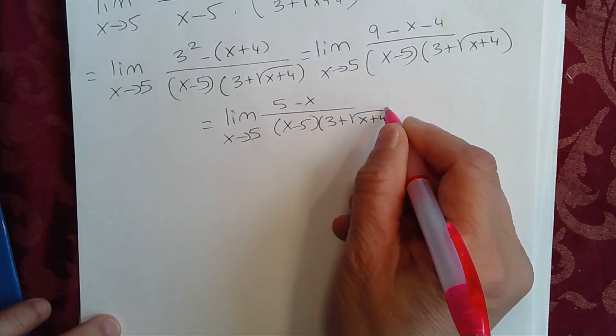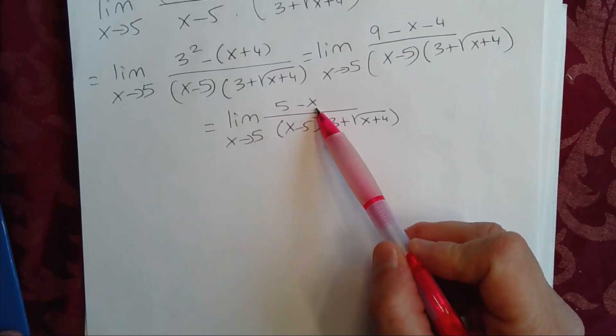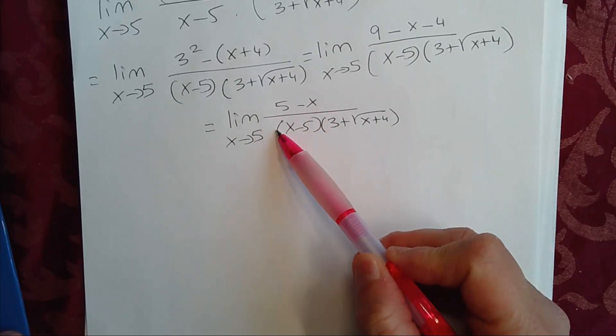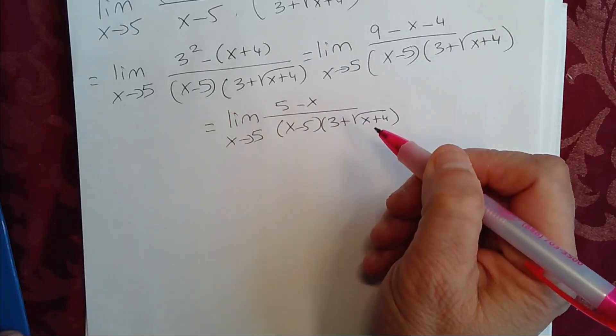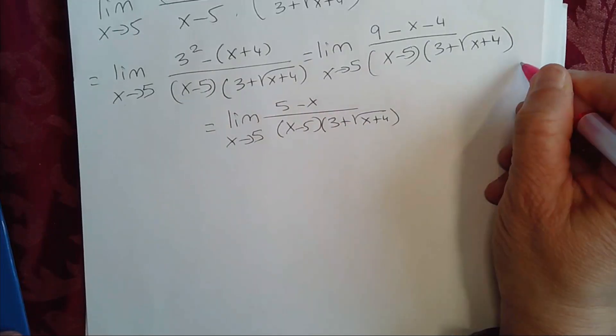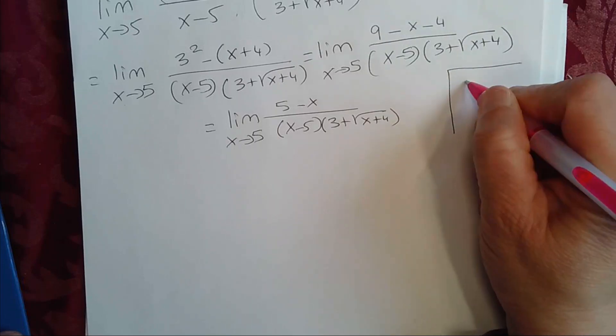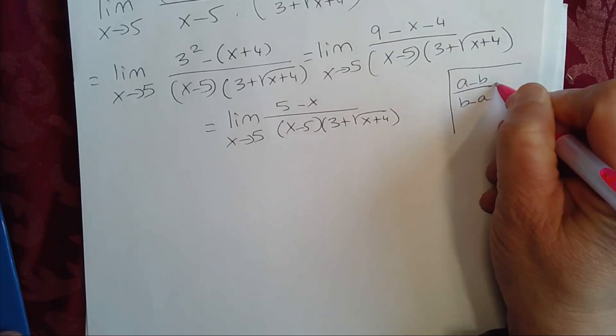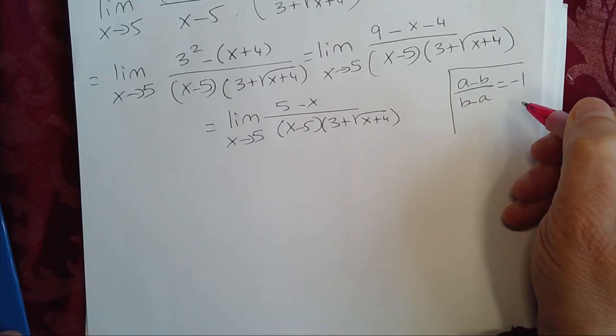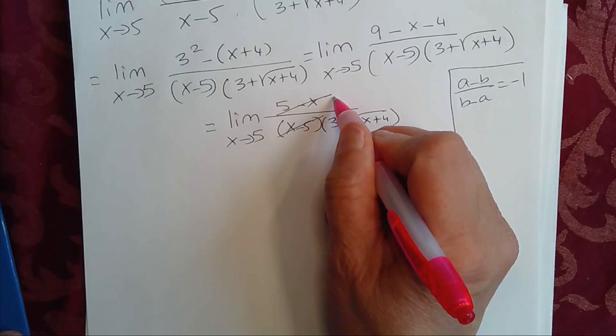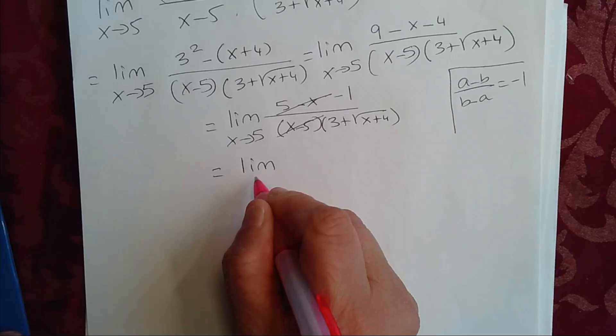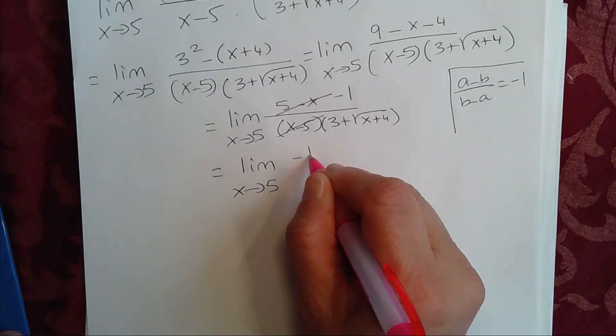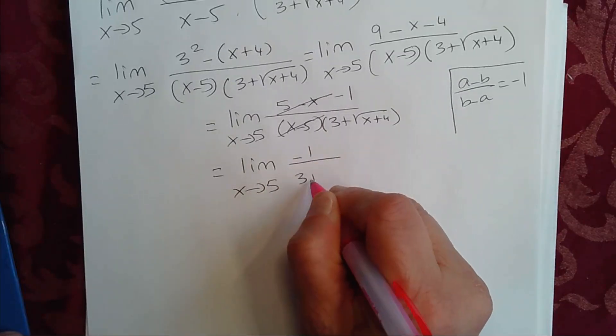So here you'll see that you have 5 minus x divided by x minus 5. If you divide them together, that's the same as negative 1. Now, if you recall from algebra, if you have a minus b divided by b minus a, that's equal to negative 1. So this gives us negative 1, and that's the same as the limit as x approaches 5 of negative 1 over 3 plus square root of x plus 4.